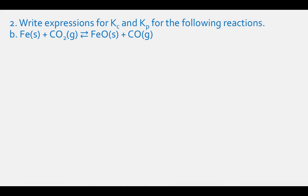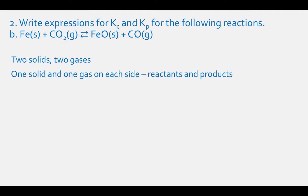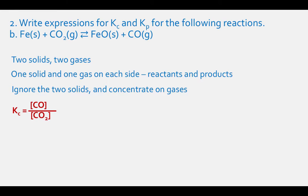For letter B, we have two solids and two gases — one solid and one gas on each side of the reaction. We can ignore the two solids and concentrate on the two gases. The Kc expression is the concentration of ClO divided by the concentration of ClO₂. The Kp expression is the partial pressure of ClO divided by the partial pressure of ClO₂.